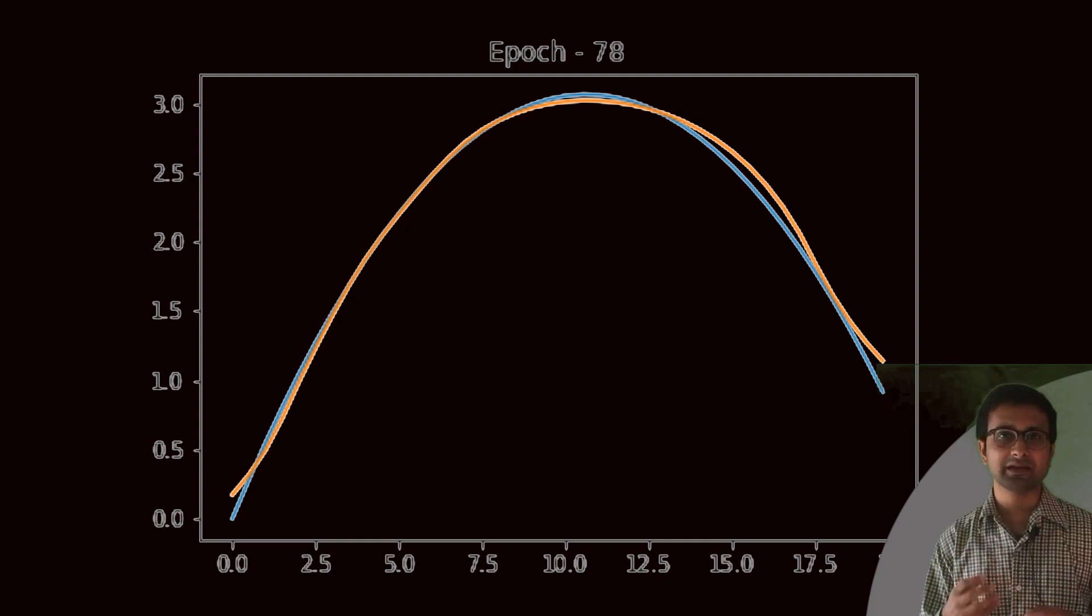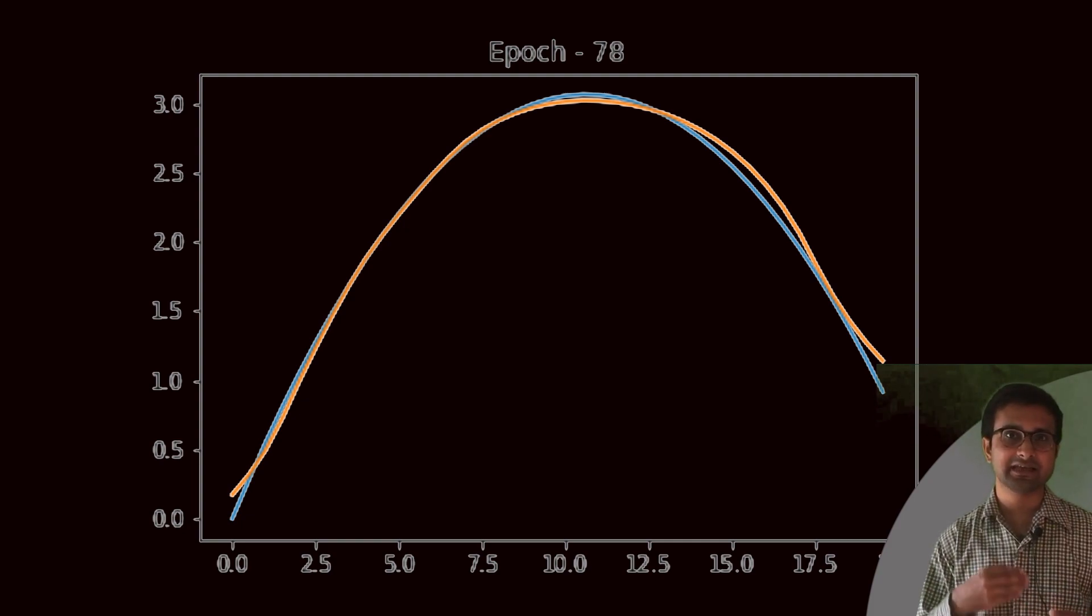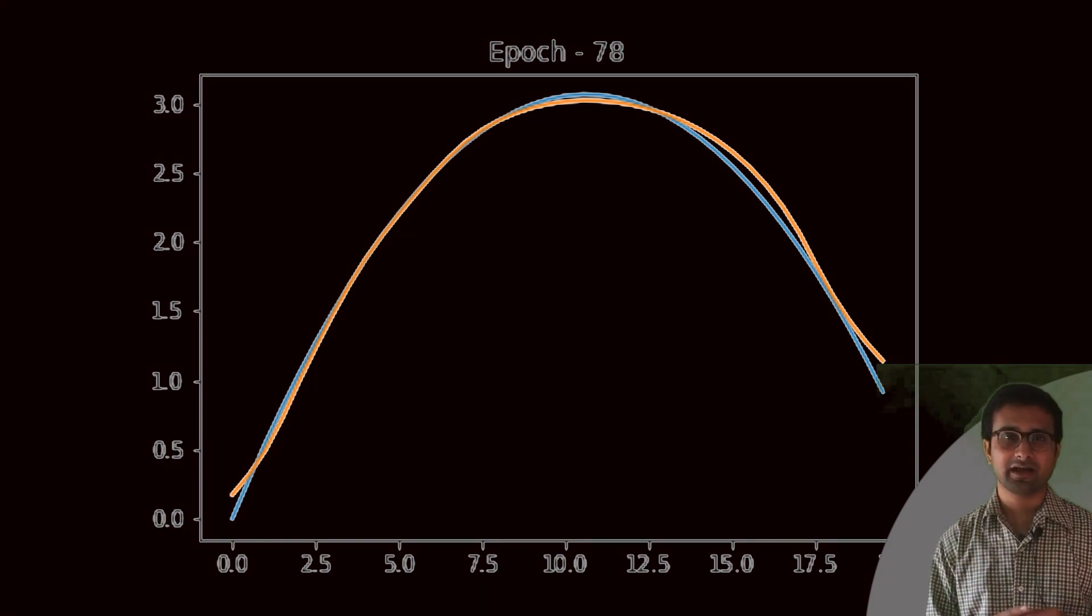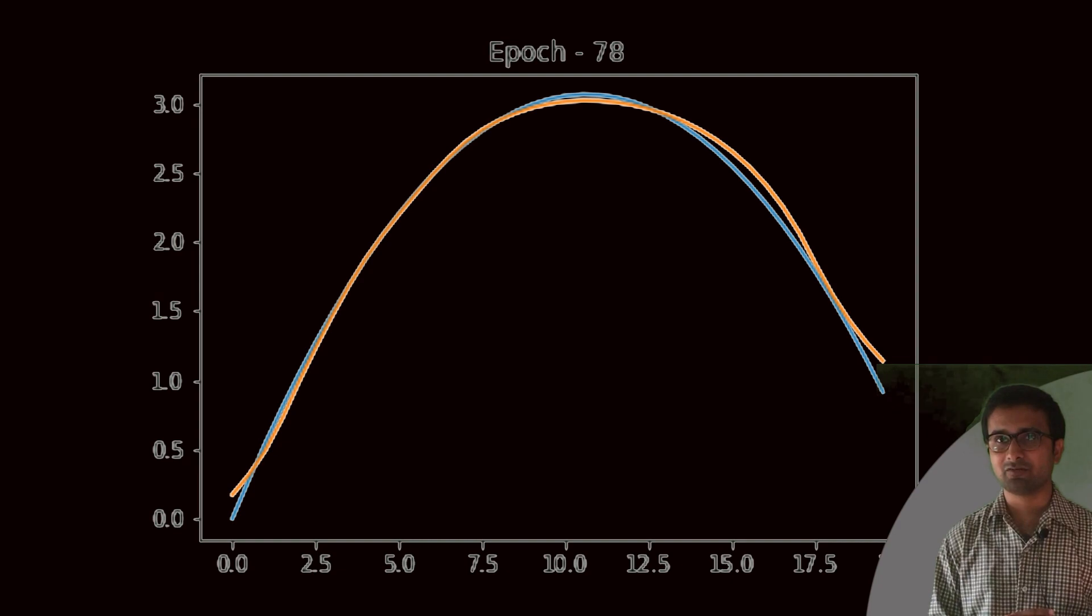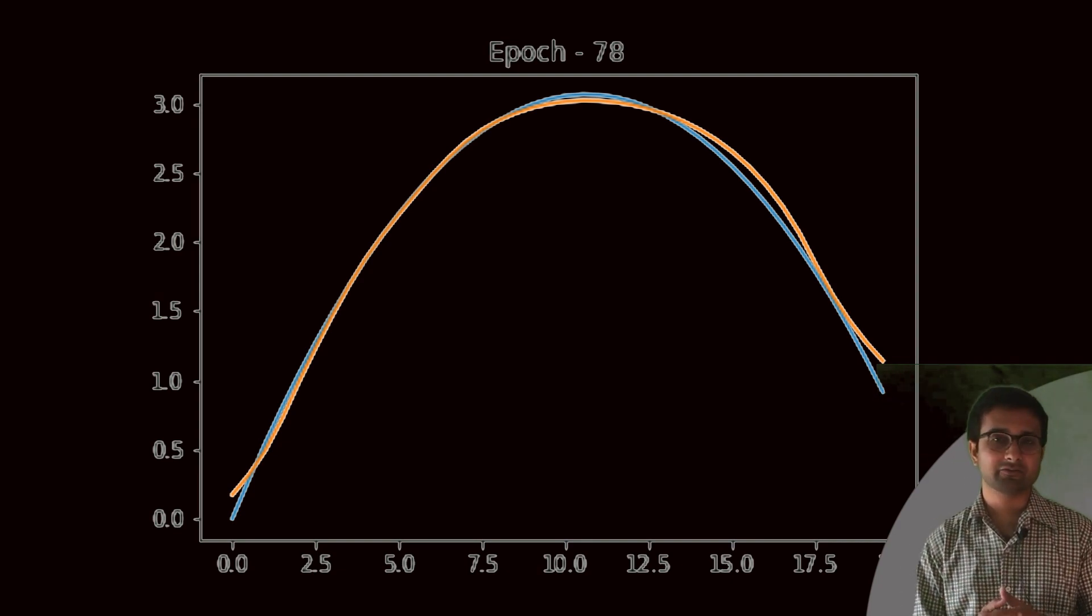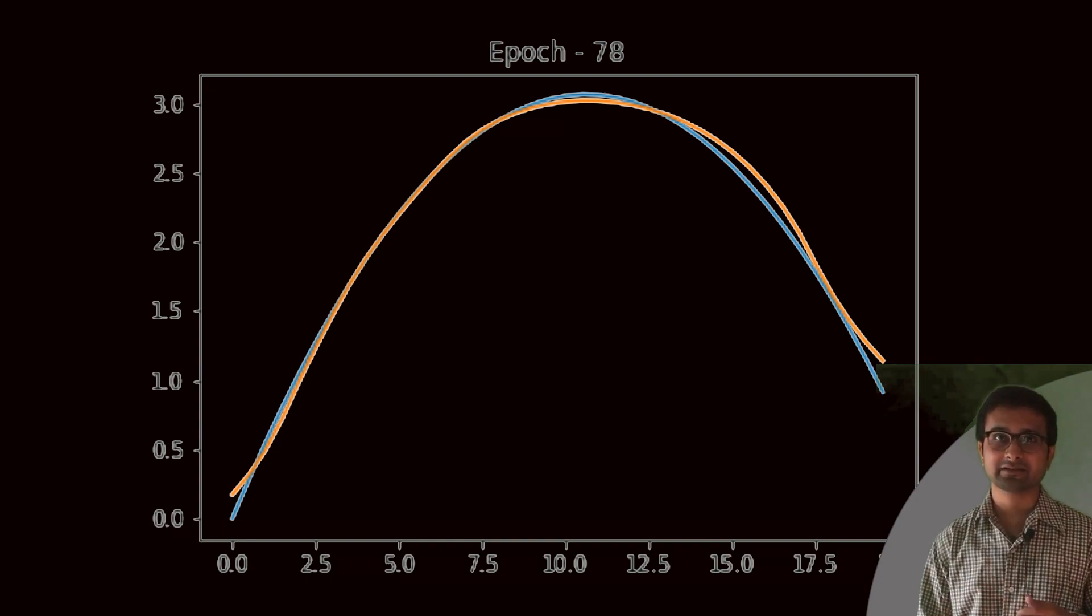And this all happened with only 15 minutes of training. Remember how complex the function was and how we were able to figure out the same trajectory, or I can say a very very matching trajectory, with help of a deep neural network. This is how a neural network comes handy to understand these non-linear functions.